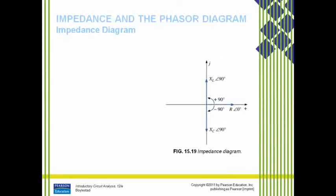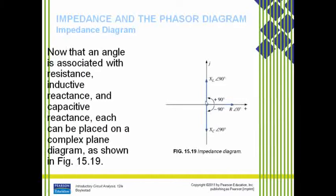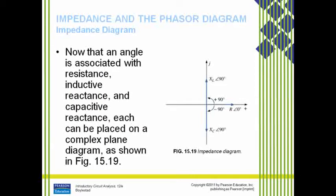The impedance diagram: the total impedance of the three elements extends from minus 90 to plus 90 degrees. For resistance, the angle is closer to zero. For inductive reactance, the angle is closer to plus 90. For capacitive reactance, the angle is closer to minus 90. We are representing all three elements on the complex plane — this is the impedance diagram.